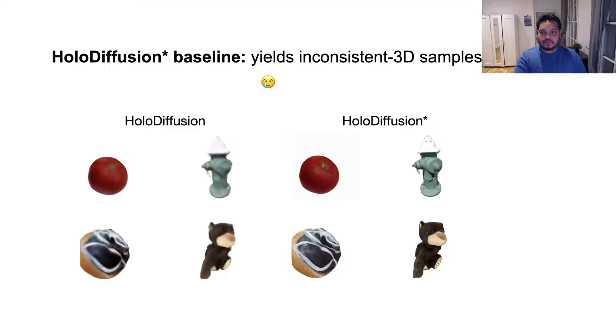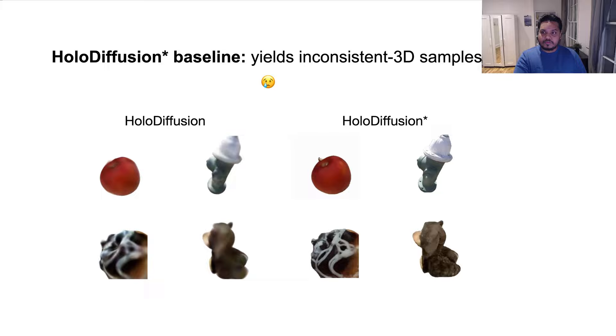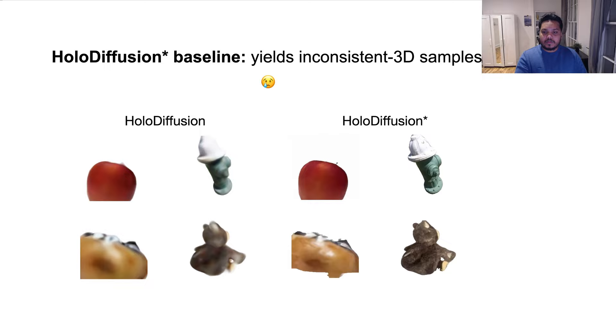Although the HoloDiffusion star samples look more detailed, the independently up-sampled views of the low resolution samples are 3D inconsistent and hence cause a lot of flickering in the 360 degree spin around videos.